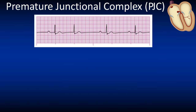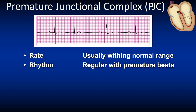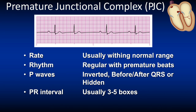For premature junctional complexes, the rate is usually within normal range and the rhythm is regular with premature beats. The P wave is inverted — it could be before or after the QRS complex, or hidden. The PR interval is usually 3 to 5 boxes but could be prolonged, and the QRS is narrow. When you scan the strip, you will notice a QRS complex earlier than expected. Because there is no P wave in front of this QRS complex, it is classified as a premature junctional complex.